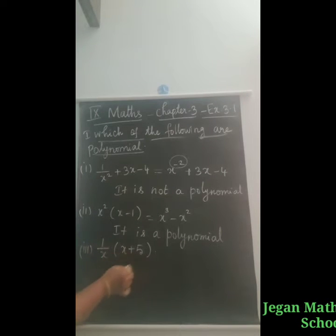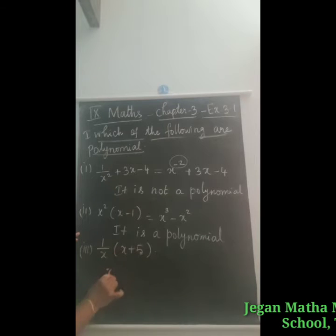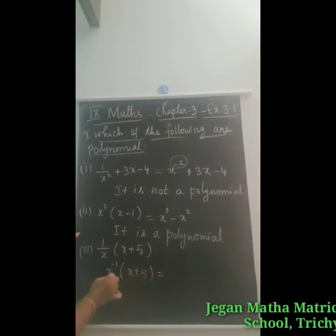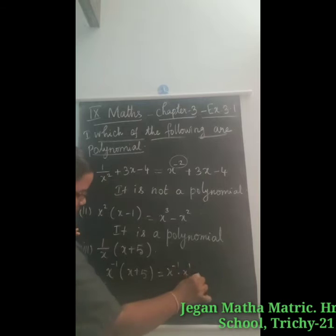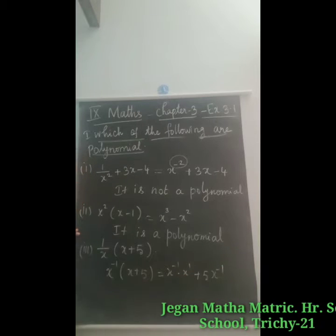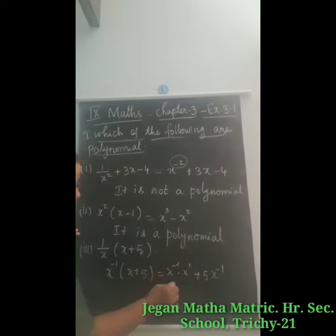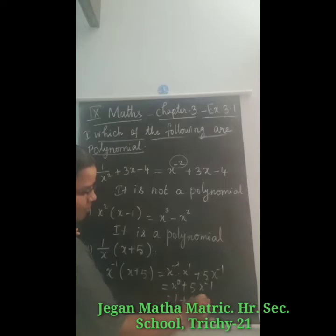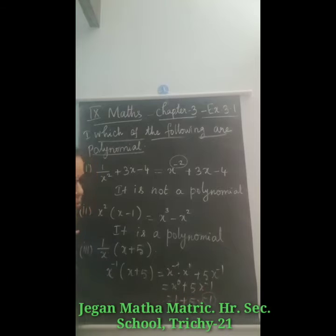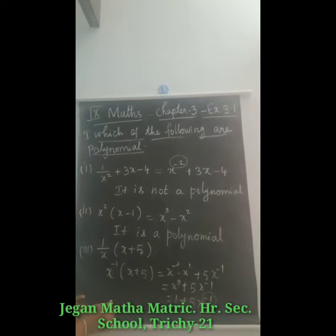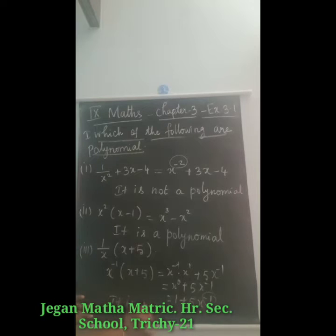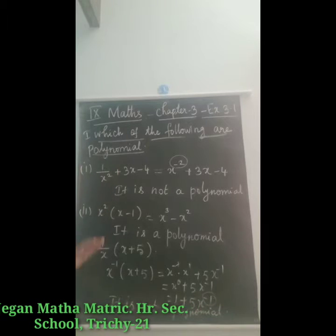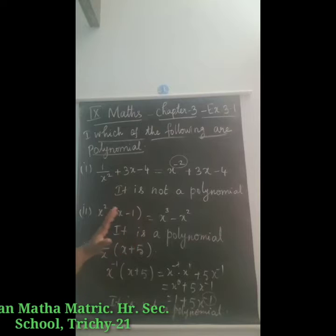Next question: 1 by x into x plus 5. We change it to x power minus 1 into x plus 5, then multiply: x power minus 1 into x power 1 plus 5 into x power minus 1. The minus 1 plus 1 cancel, giving x power 0 plus 5x power minus 1, which equals 1 plus 5x power minus 1. Here also a negative integral power is present, so it is not a polynomial.